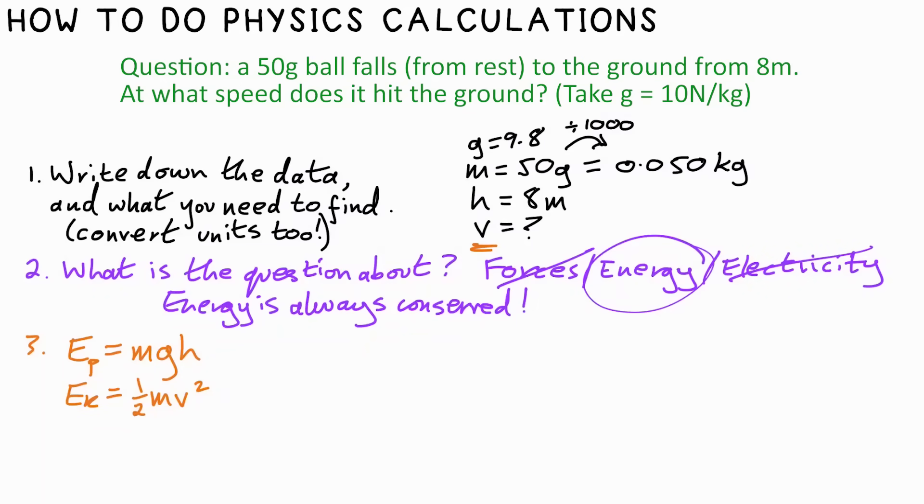We've written our equations down. It's really important that you do that. And now we need to figure out, do we need to rearrange these? What do we have? We have M, we have H, we have G, and we're trying to find V. So we can't really use the kinetic energy equation yet, can we? But let's figure out what the GPE is. So GPE, or I've just written EP for short,